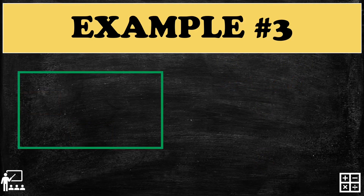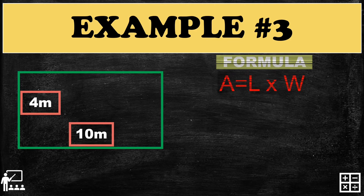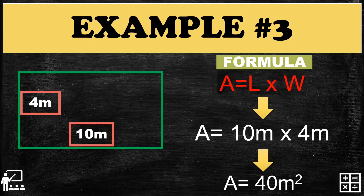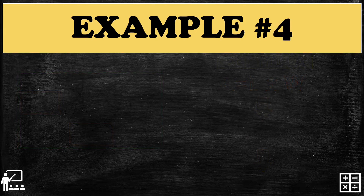Example number three: a rectangle has a width of four meters and a length of ten meters. Using the formula L times W, we substitute: ten meters times four meters gives us forty meters squared. Is it easy, right?